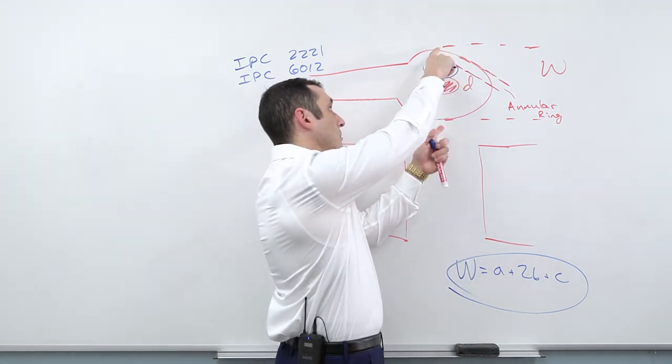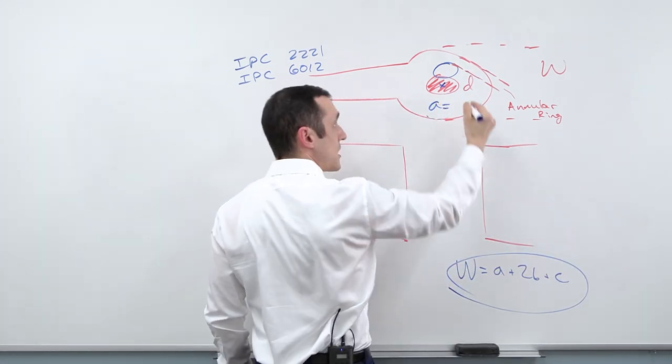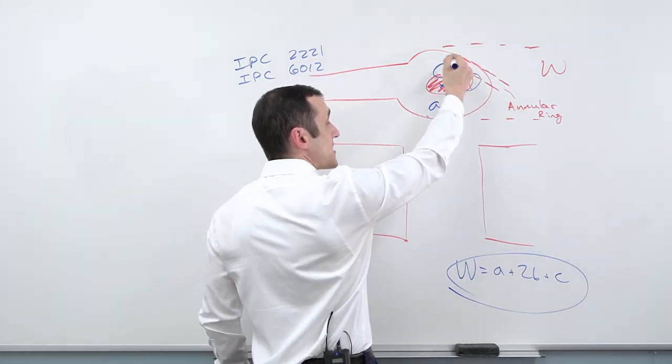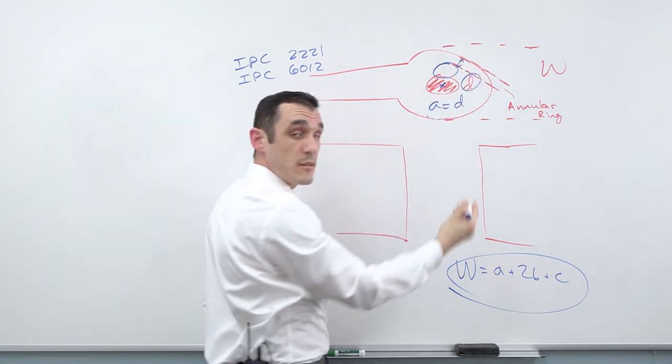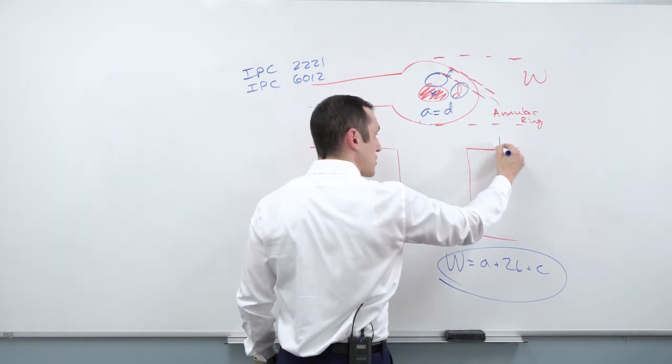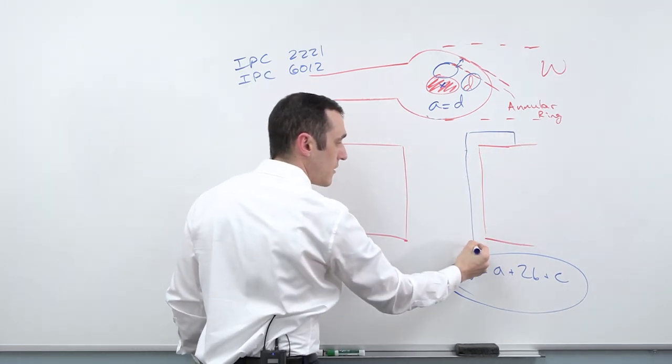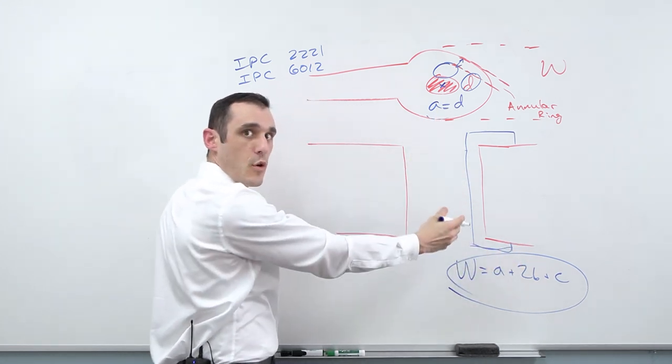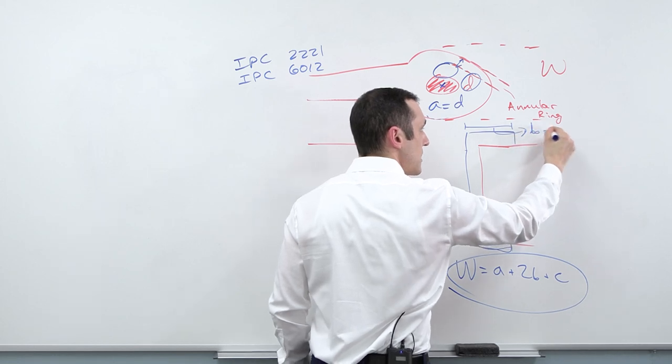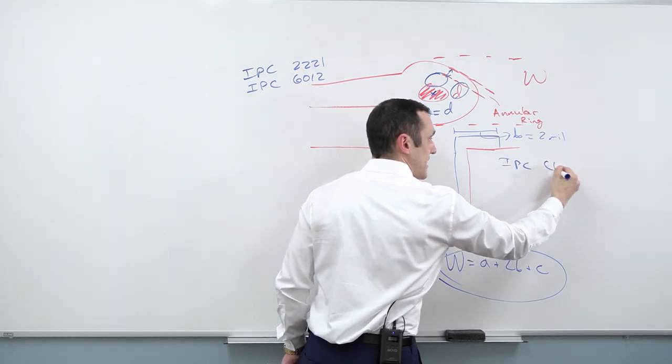This is actually how it's written in the IPC standards. So what are each of the things inside of this formula? Well, W is the minimum land size, meaning the minimum diameter of this pad. A is the diameter of the hole. So here we have A in this formula is equal to this guy, D. Next, what is B? Well, B is specified as this distance right here, this minimum distance that they allow. So for an external supported hole, meaning like an external via, meaning on the top or bottom layer where we have the plating extending all the way around the edge of the hole, this distance right here would be B equals basically two mil. So that's for IPC class three products.